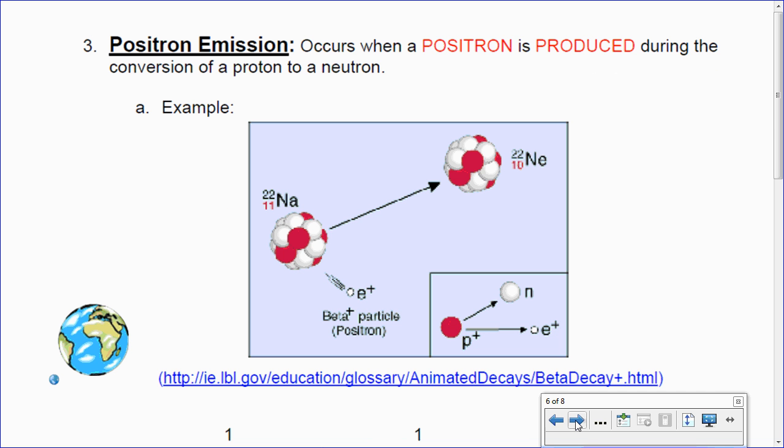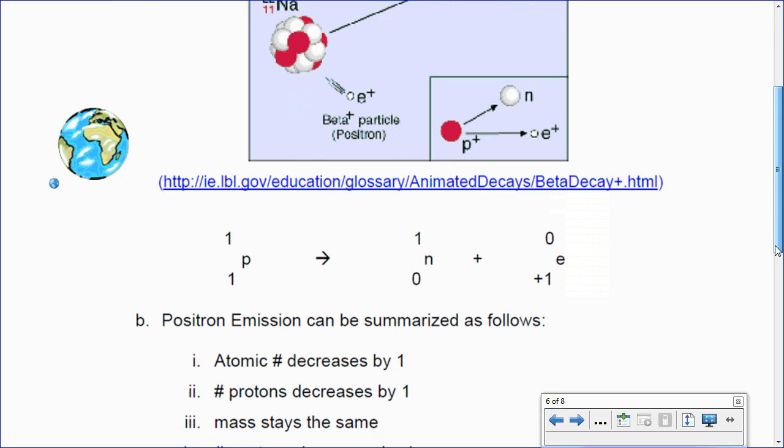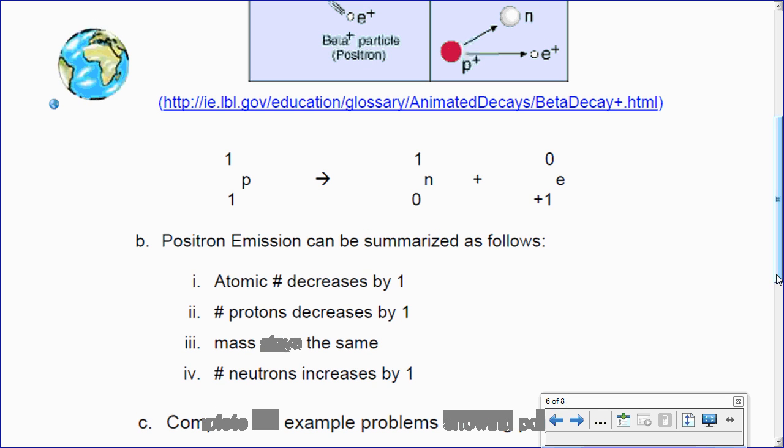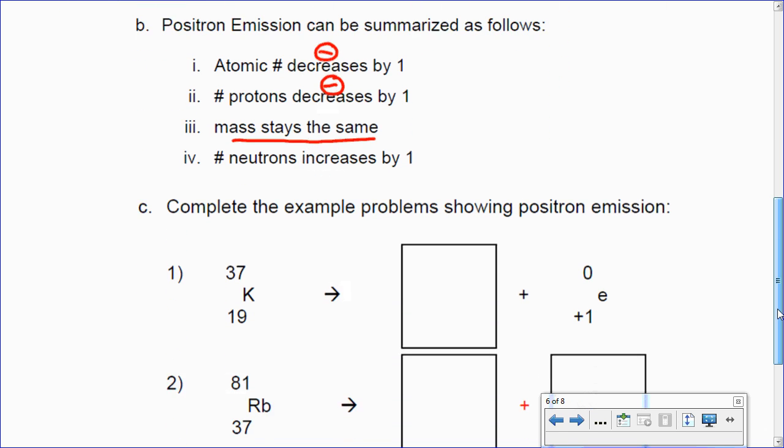Okay. Let's look at some positron emission. Positron is really rare. We do have to give it some time and some attention. It's when a positron is produced during the conversion of a proton to a neutron. Okay. This is some weird stuff, again, that happens inside the nuclei where we produce a positron, which is a positively charged electron. It can be summarized as follows. The atomic number decreases by one. Protons decrease by one. Mass stays the same. Neutrons increases by one. So, we're going to drop our atomic number and drop our protons. So, it's kind of like something we're similar with. We're familiar with already.